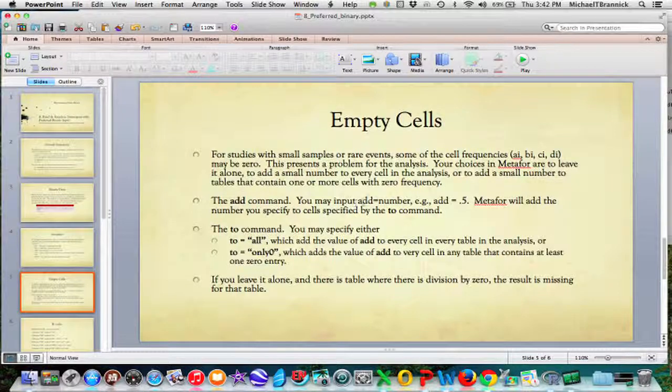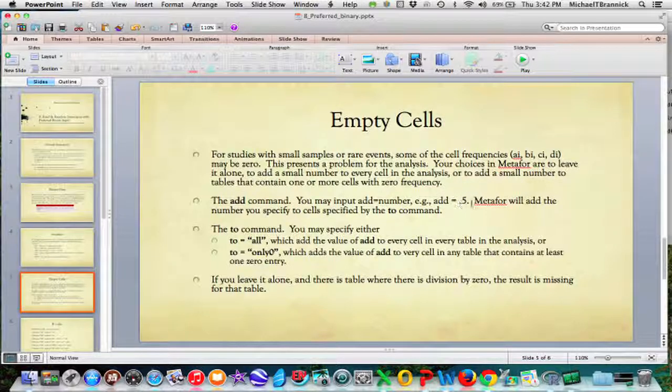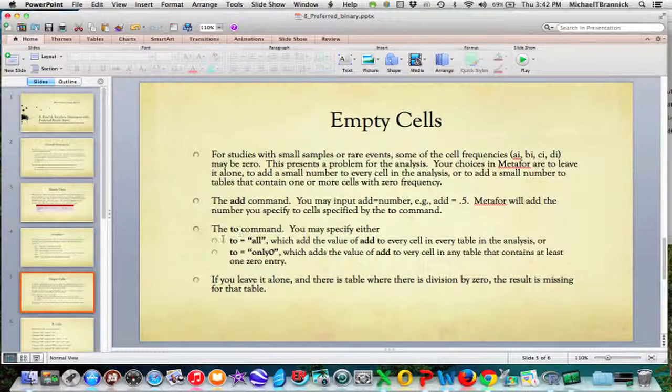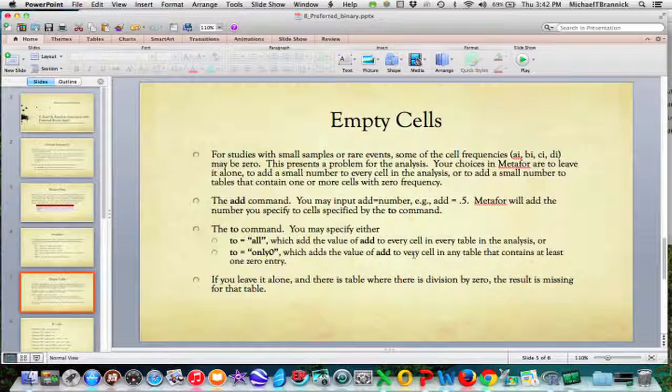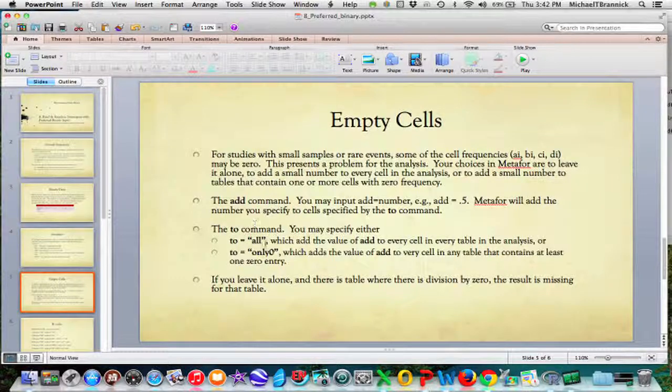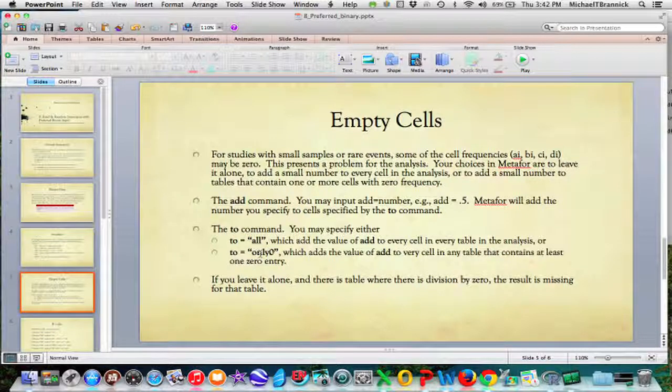The way you do that is by the add and the to command. The add command says add some numbers—you can set add equal to 0.5, so you add a half to each cell in the table. To says where to add to. You can say to is all, in which case it takes this value of add, like 0.5, and adds 0.5 to every cell in every table in the analysis. Or you can say to equals only zero, in which case it'll add that value to every cell in any table that contains at least one zero entry. All gives it to every table; only zero applies the add value to only some of the tables.